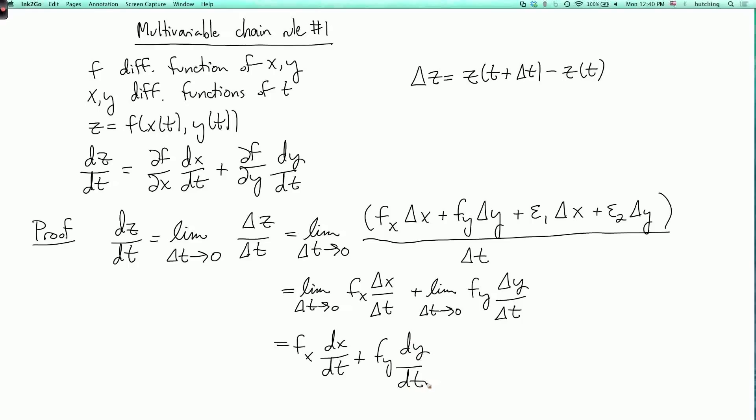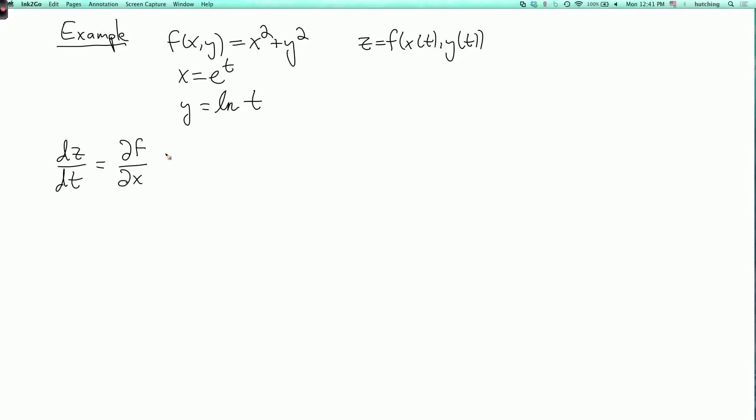Should we do one more example? Well, let's do one more example. So suppose f of xy equals x squared plus y squared. And suppose that x equals e to the t, and y equals the log of t. So let's calculate dz dt. We're writing z equals f of x of t comma y of t. So dz dt equals partial f partial x dx dt plus partial f partial y dy dt.